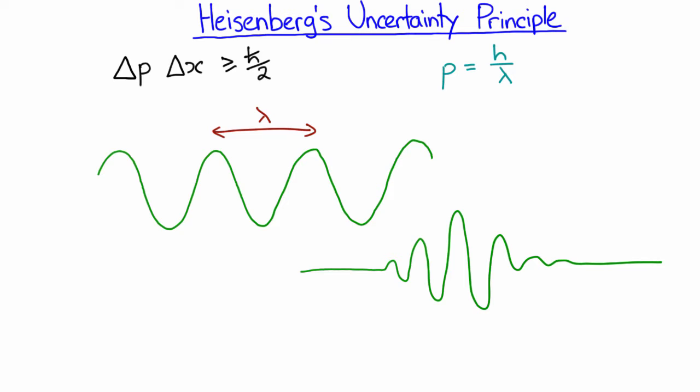And so another way of writing Heisenberg's uncertainty principle is to say a wave that has a well-defined momentum just doesn't look like a wave that has a well-defined position. So this equation here is a graphical version of Heisenberg's uncertainty principle.